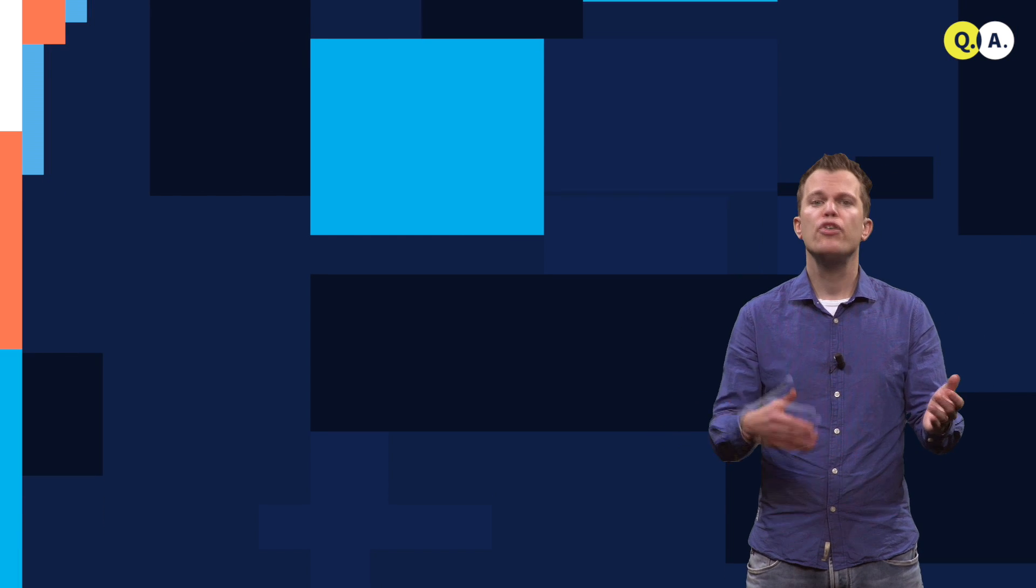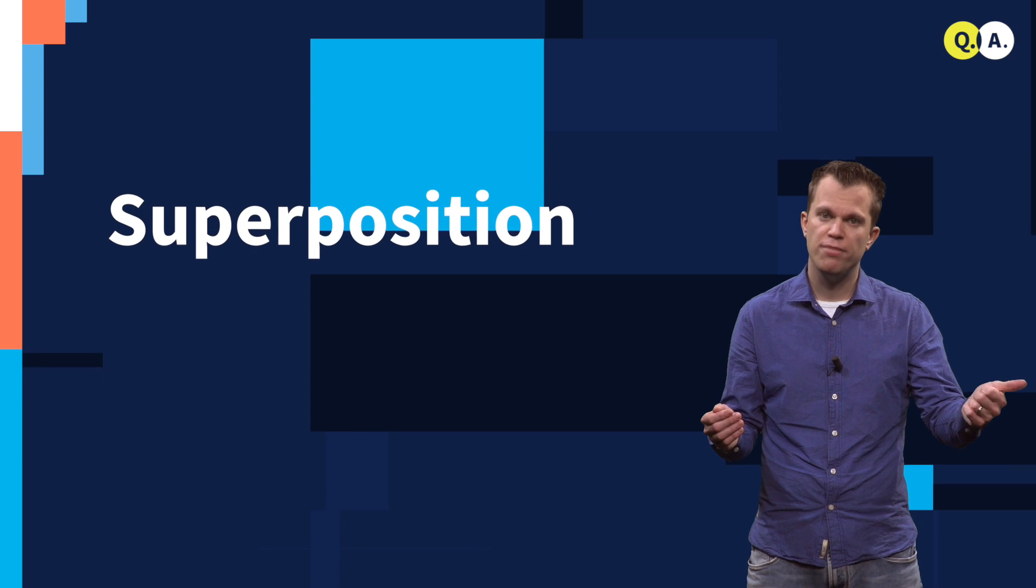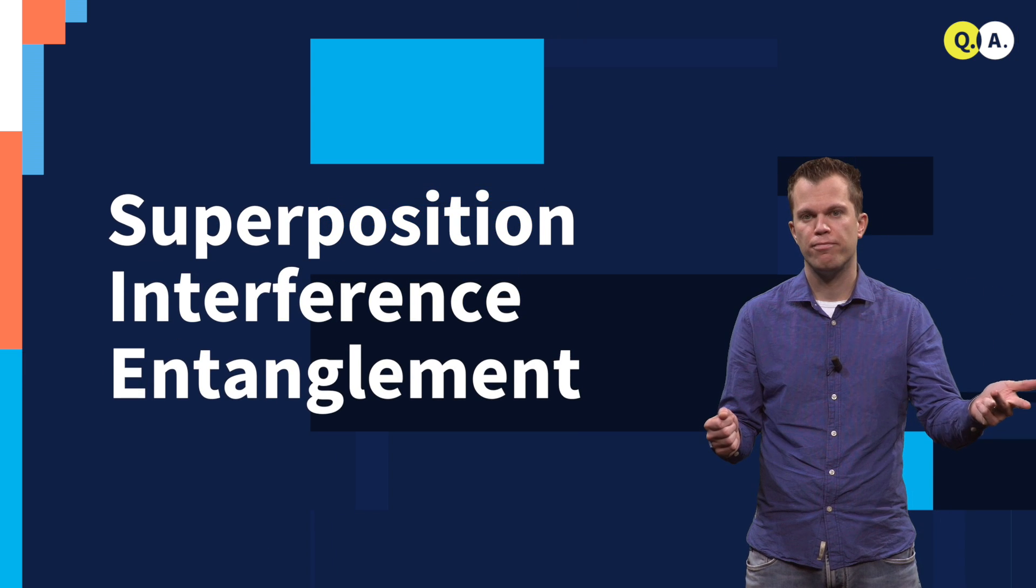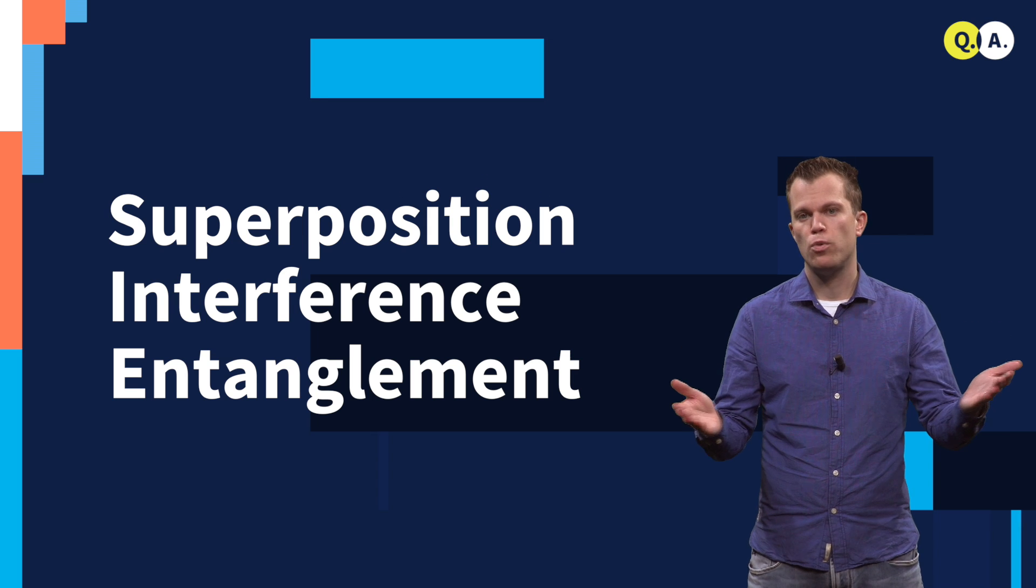How can quantum solve this? Quantum mechanics can offer unique phenomena. These include superposition, interference and entanglement. Let's start with superposition.